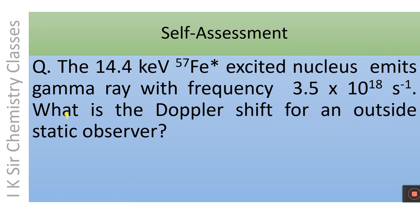Self-assessment: After the 14.4 keV Fe-57 excited nucleus emits a gamma ray with frequency 3.5×10¹⁸ per second, what is the Doppler shift for an outside static observer? Please pause the video and try to solve the problem.